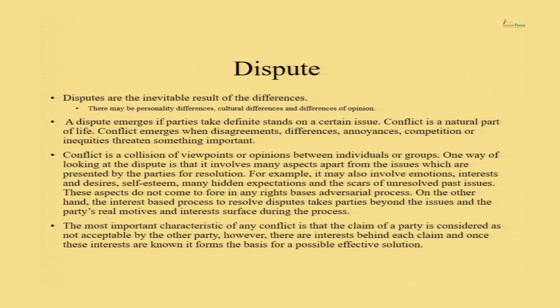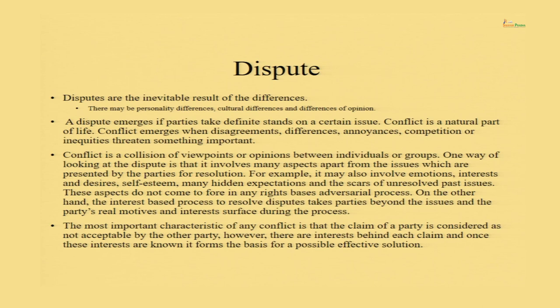Conflict is a collision of viewpoints, a collision of opinions between individuals, groups, or corporations. When you look at a conflict, things which are put on the table are not everything which are part of that conflict. There are many hidden things — your desires, your self-esteem, your emotions, your hidden expectations. These are hidden aspects of any dispute and are never presented to the other party. There may be scars of unresolved past issues. These aspects do not come to the fore in any court-based litigation. You only talk in terms of rights and claims, and these agendas remain hidden in litigation.